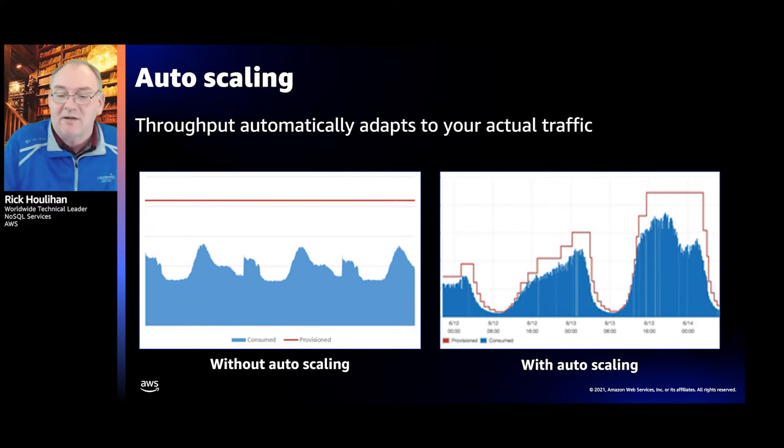DynamoDB also offers on-demand capacity mode, which gives you instantaneous provisioning. Just-in-time provisioning takes 12-15 minutes to start allocating increases to your table, but on-demand has no wait time — from zero to a million WCUs in essentially zero seconds. It's a bit more expensive but works really well for spiky workloads you can't predict. You don't have to ever provision anything — just throw the workload at it in on-demand mode. The average enterprise application runs at 15% CPU utilization overall, meaning a lot of infrastructure sits idle waiting for work. DynamoDB avoids that with just-in-time provisioning.